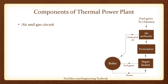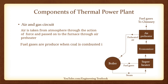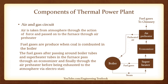Air and Gas Circuit. Air is taken from the atmosphere and passed on to the furnace through an air preheater. Flue gases are produced when coal is combusted in the boiler. These flue gases, after passing around the boiler tubes and superheater tubes in the furnace, pass through an economizer and finally through the air preheater, before being exhausted to the atmosphere via an electrostatic precipitator and chimney.